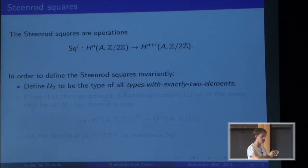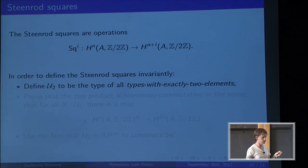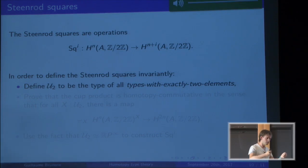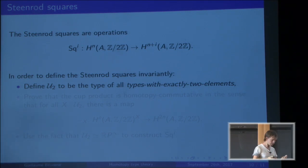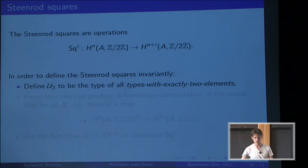We start by defining U₂ to be the type of all types with exactly two elements. It might seem strange because intuitively there is only one two-element space, but this two-element space is equivalent to itself in two different ways: the identity equivalence and the equivalence which swaps the two elements. Both are somehow included in the structure of the type of all types with two elements.